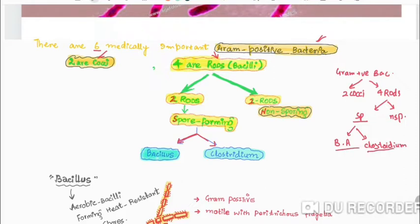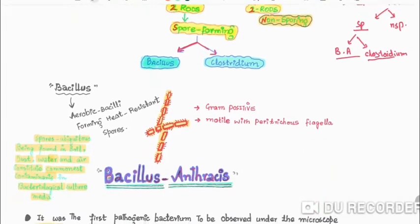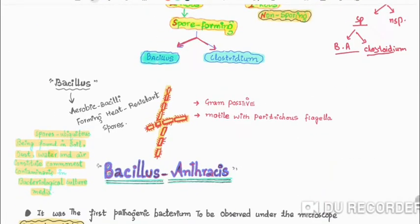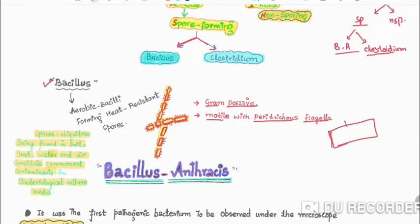Today's topic is Bacillus anthrax. This Bacillus is gram positive, motile, with peritrichous flagella. Because this rod is slender shaped, it is a gram positive bacteria with peritrichous flagella covering the whole body.